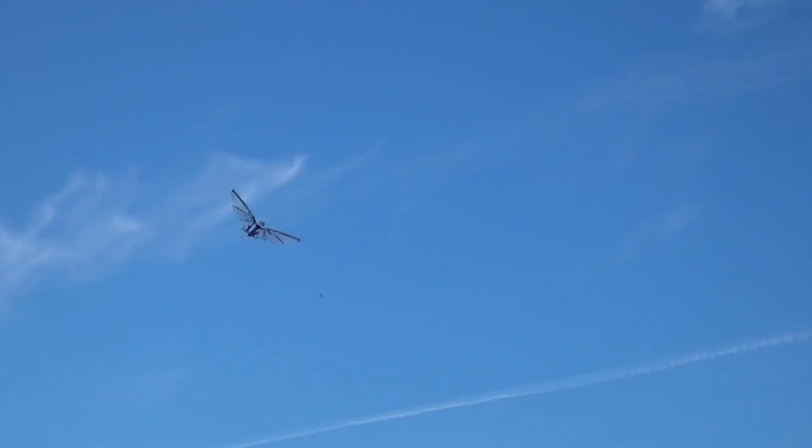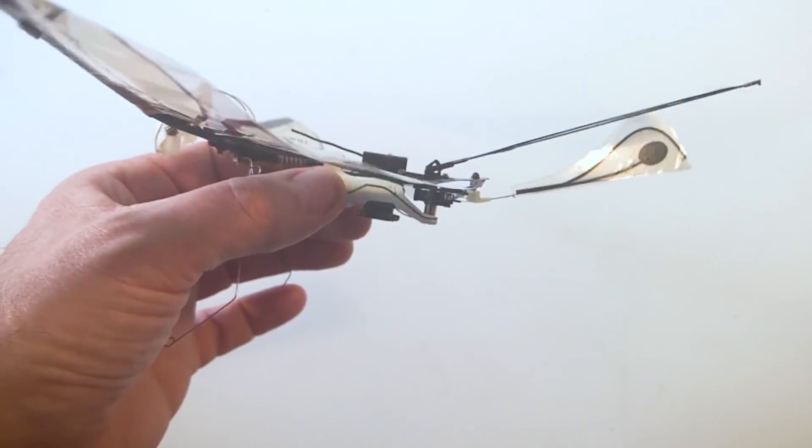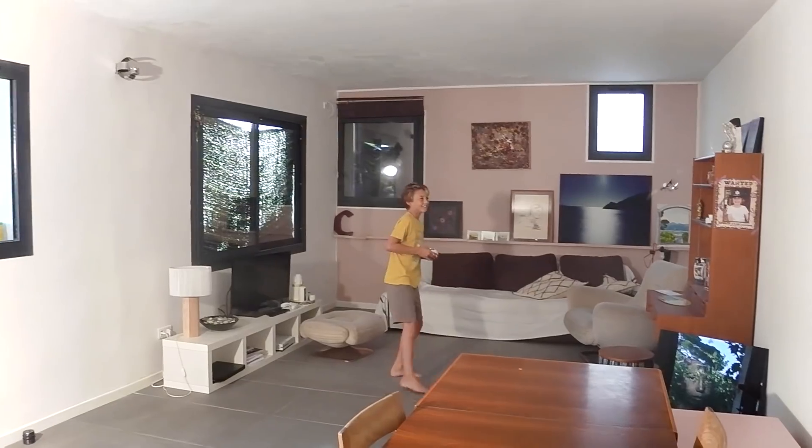Outdoors, MetaFly can enjoy its full speed. By changing the direction of its tail, MetaFly can fly faster when its tail is down or more controllable when it's up.